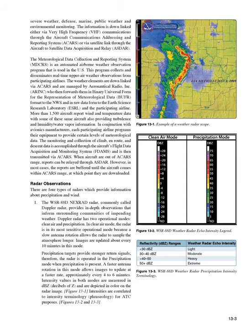SIGMETs (WSs) are in-flight advisories concerning non-convective weather that is potentially hazardous to all aircraft. They report weather forecasts including severe icing not associated with thunderstorms, severe or extreme turbulence or clear air turbulence (CAT) not associated with thunderstorms, dust storms or sandstorms that lower visibilities to below 3 miles, and volcanic ash. SIGMETs are unscheduled forecasts valid for 4 hours, or 6 hours if the SIGMET relates to a hurricane. A SIGMET is issued under an alphabetic identifier from November through Yankee. The first issuance is designated as an urgent weather SIGMET (UWS), and reissued SIGMETs are sequentially numbered.